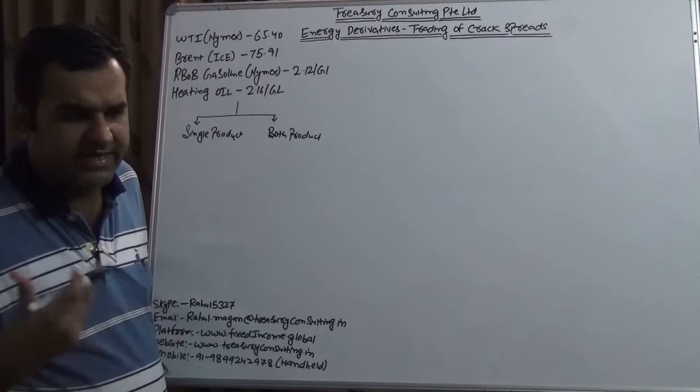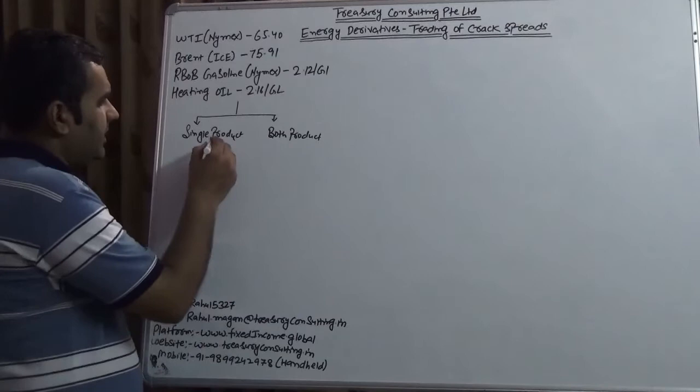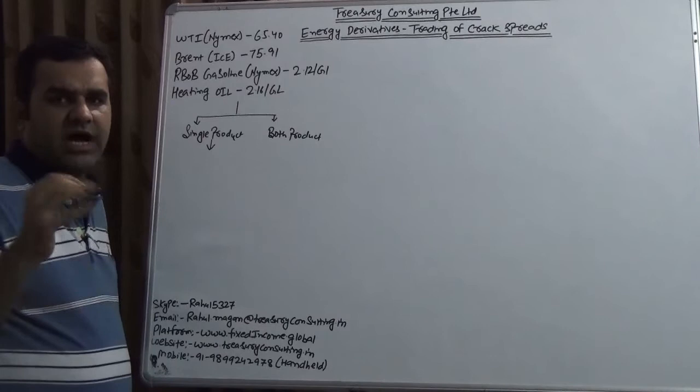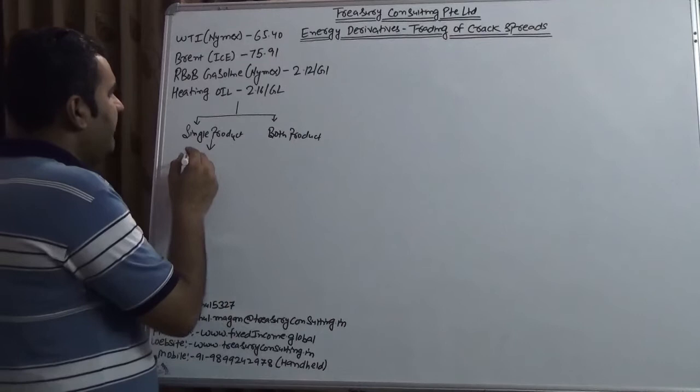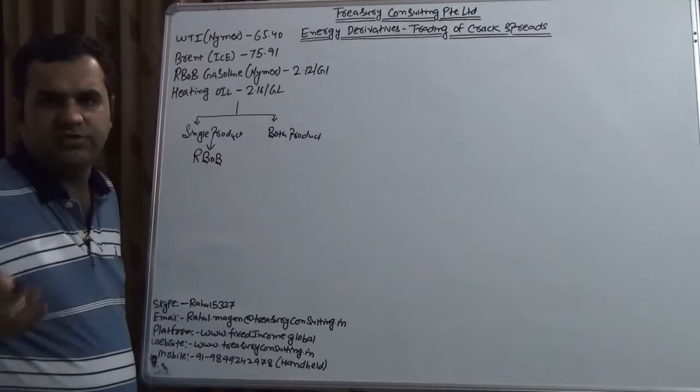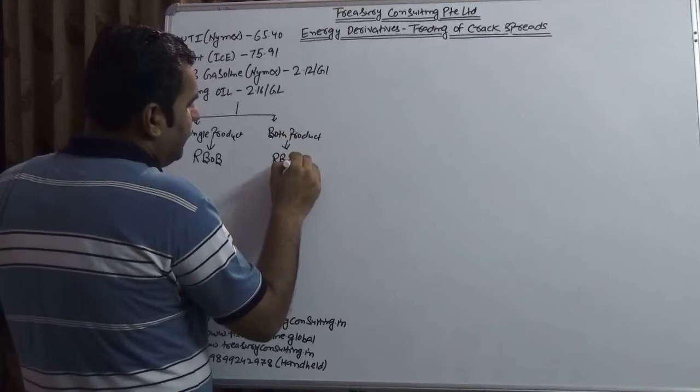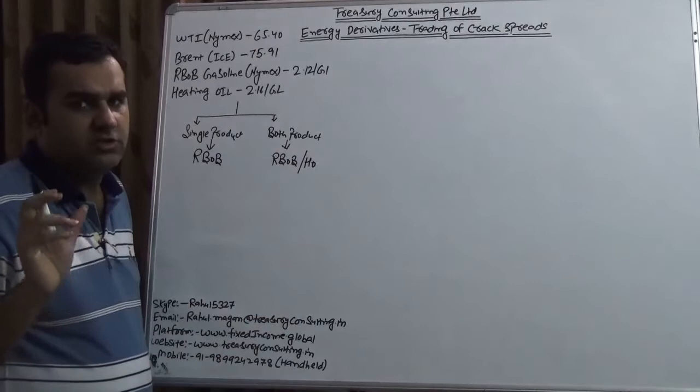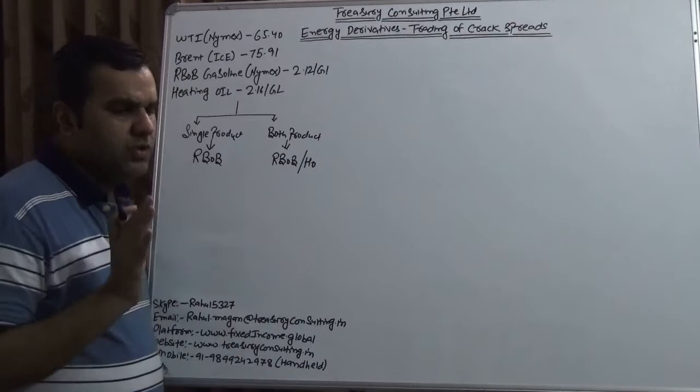There is also a multi-product type, which we are not discussing because it is quite technical in nature and difficult to deal with at that level. Single product means: if I have one barrel of oil which I bought and at the end I got RBOB — which is gasoline — and HO, which is heating oil, I have either one. So let me take an example of RBOB; I have a customer who is ready to buy the gasoline from me. Both product means I have a customer who is ready to buy RBOB from me and also ready to buy HO from me. The quantity differs — note my word — the quantity differs; that is something very important.